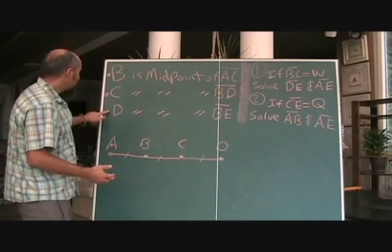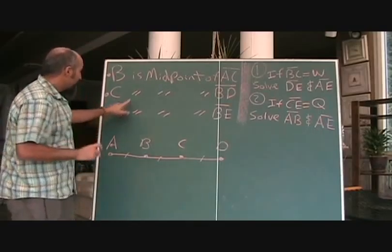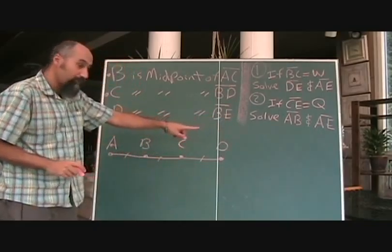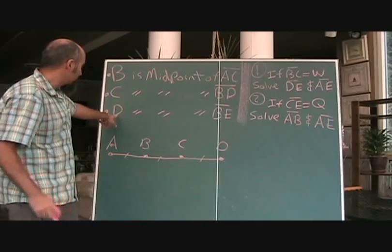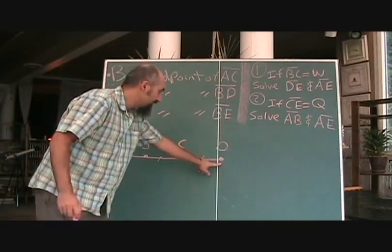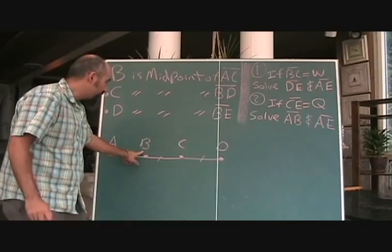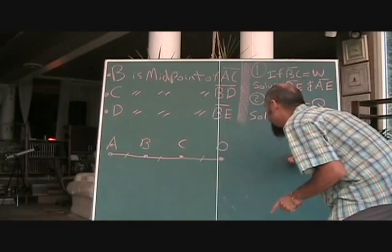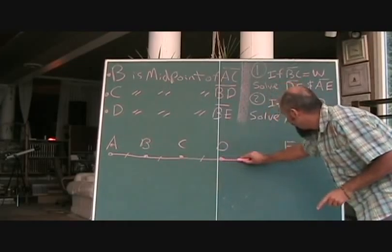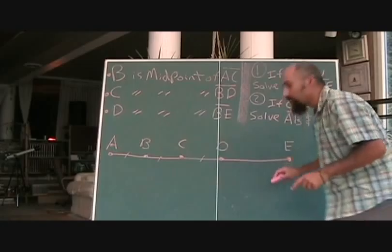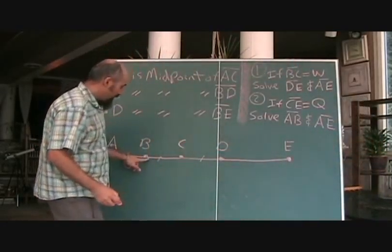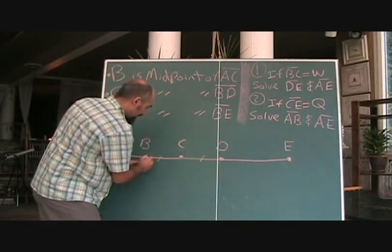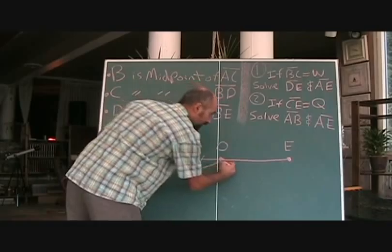Let's go to the third sentence. D is the midpoint of BE. Now we don't have an E, so we've got to put it in. We've got to make sure we put it in the right place. D is the midpoint of BE, so we're going to approximately put it where it should be. So we've got our problem laid out now. If D is the midpoint of BE, then this guy equals this guy.